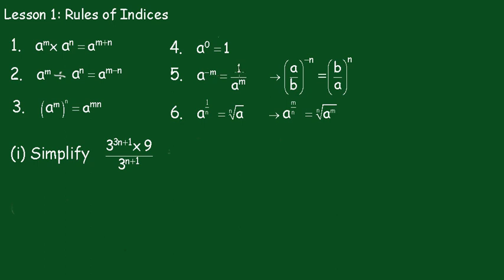a to the minus m is 1 over a to the m, which leads into this nice little result: a over b to the minus n is b over a to the n. We just turn them upside down and change the sign. a to the 1 over n is the nth root of a. a to the m over n is the nth root of a raised to the power m.